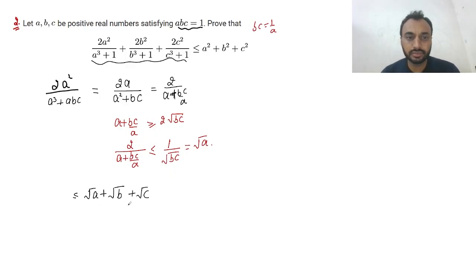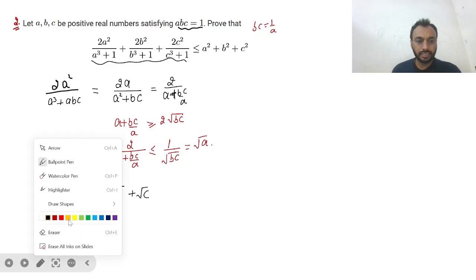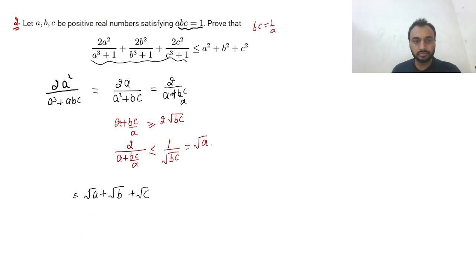Now we will try to see can we achieve the equality also. As we use AM-GM on these two numbers a and bc/a, for equality we need this number should be equal, or we can say a² is equal to bc. Similarly for the second and third expression we have b² equals ac and c² equals ab. From here I think we can say that a, b, c are 1, because bc is 1 by a. We get a is 1 and b is 1 and c is 1.